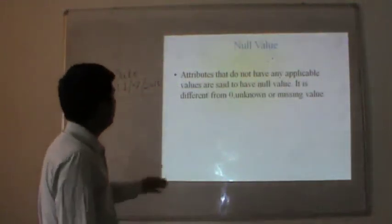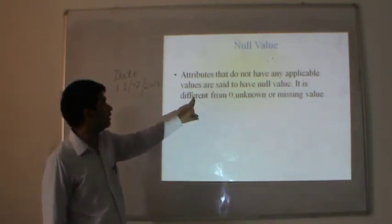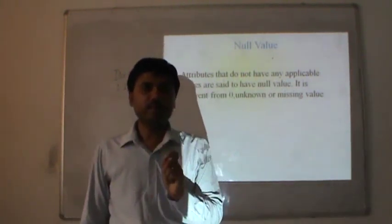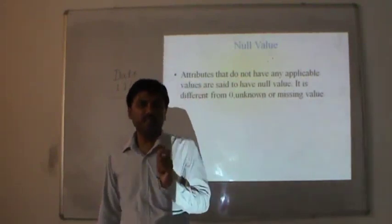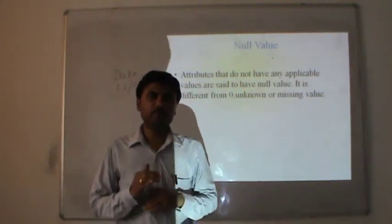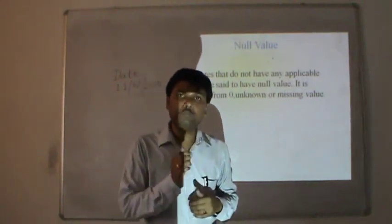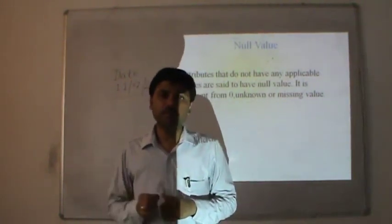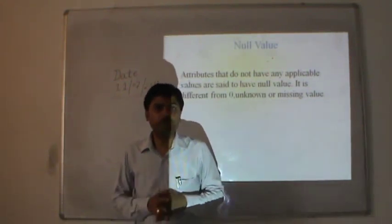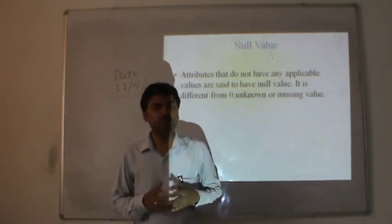What is the null value? Attributes that do not have any applicable value are said to have a null value. It is very important that null is different from zero, unknown, or missing value. For example, consider a student who can take one elective subject among four subjects. When grades are assigned, the student gets a grade only for the one elective they took. The other three subjects are not applicable to that student — this is represented by a null value. In this case we use null attributes.